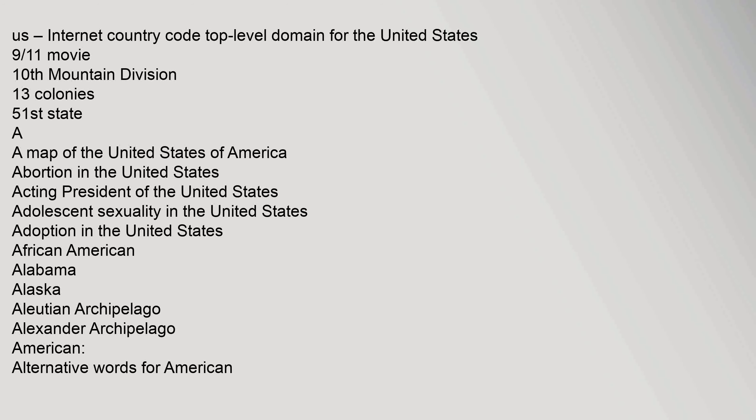A: Map of the United States of America, Abortion in the United States, Acting President of the United States, Adolescent Sexuality in the United States, Adoption in the United States, African-American, Alabama, Alaska, Aleutian Archipelago, Alexander Archipelago, American — alternative words for American.